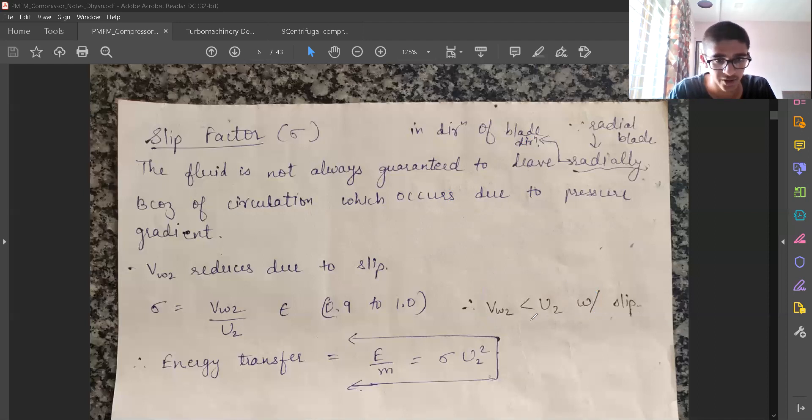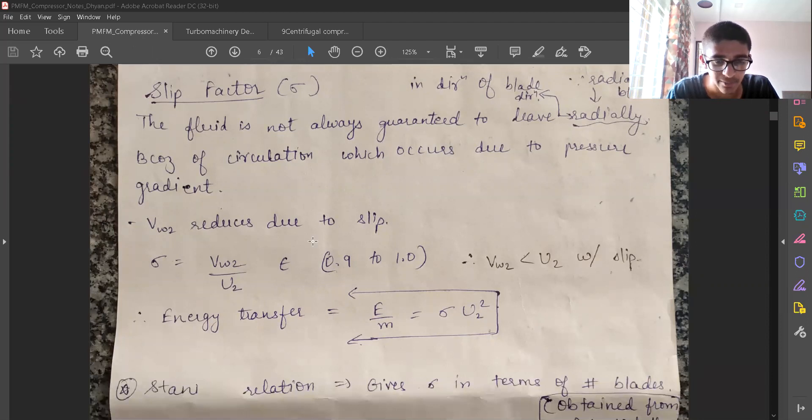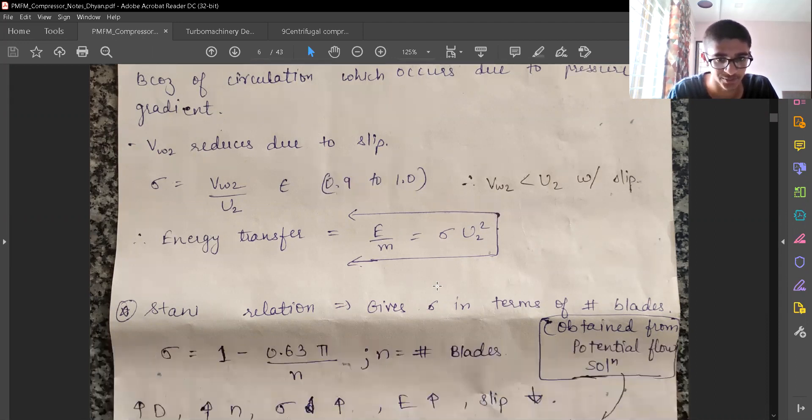Non-viscous fluids will also have pressure gradients and this pressure gradients leads to circulation of fluid and the circulation of fluid will lead to Vw2 which is not equal to U2. Earlier we have seen Vw2 was equal to U2 but that was without slip. With slip, Vw2 and U2 are going to be different and the ratio of Vw2 to U2 is given by sigma that is the slip factor. Now the energy transfer will change to E by M dot is equal to sigma U2 square. Earlier we had an equation which was M dot U2 square. Now we have E is equal to M dot sigma U2 square. Sigma is practically between 0.9 to 1, so we have seen that energy transfer in an actual case is lower than ideal energy transfer.